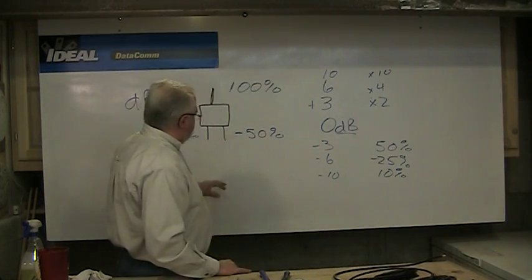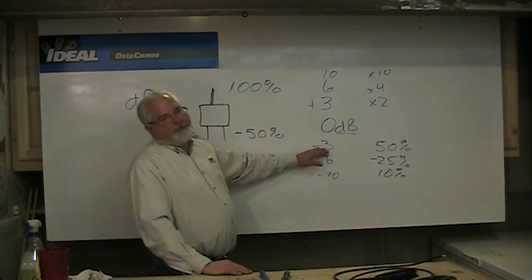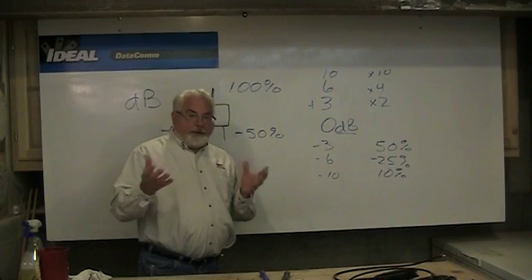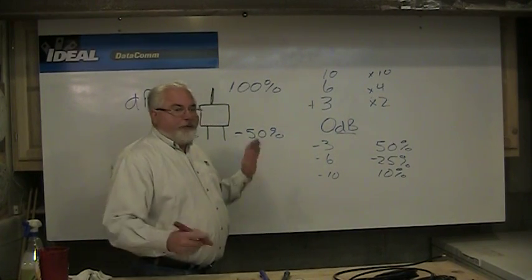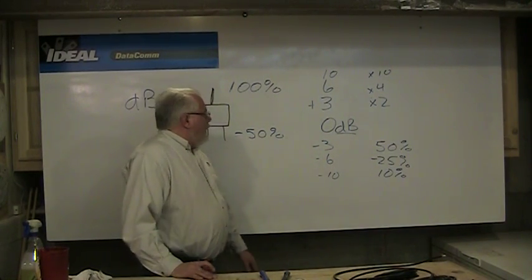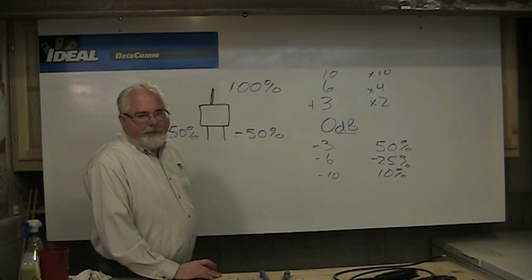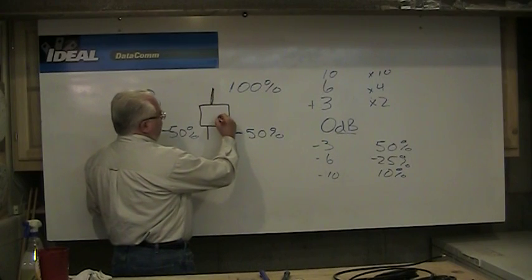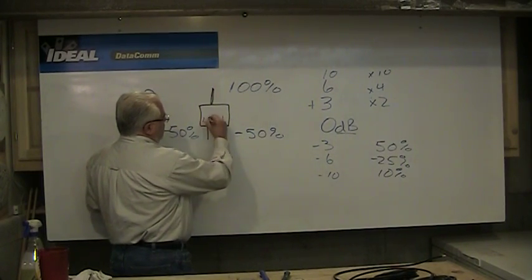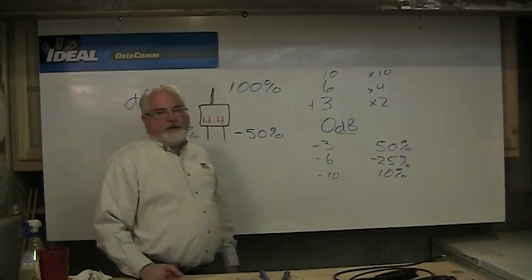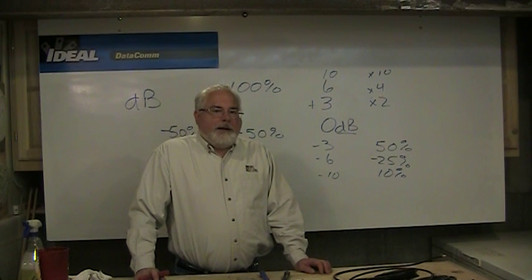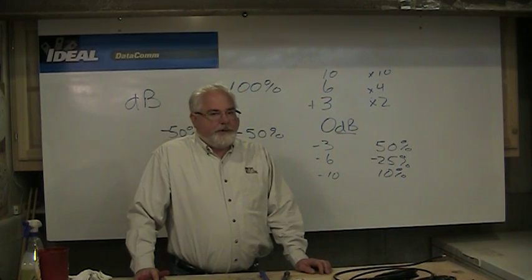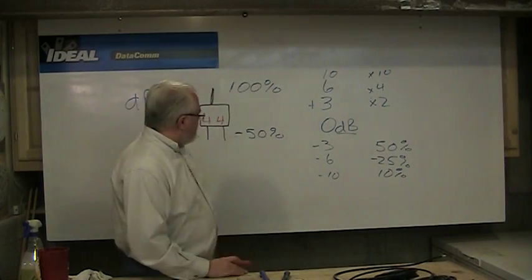So we know that this is at least a 3 dB drop because of the loss of the splitter itself and it's also based on frequency too. It might say 3 point something, 3.3 or 5 or 7. I'm going to tell you the standards say it ought to be somewhere under 4. So most two way splitters lose around 4 dB of signal. I'm going to add and subtract these dB numbers when I go about figuring out is there enough signal at the end of the day at the outlet.